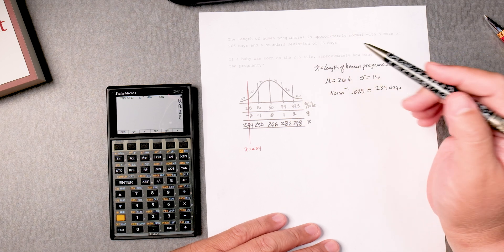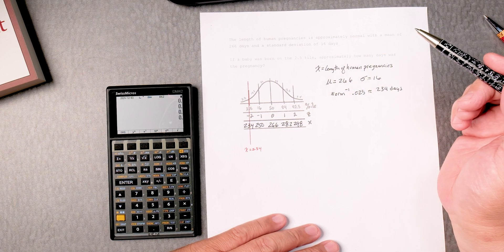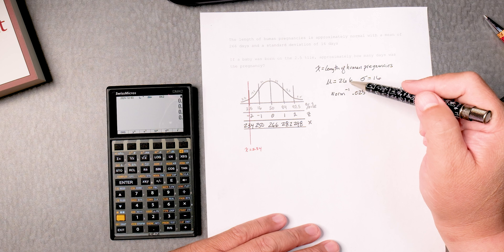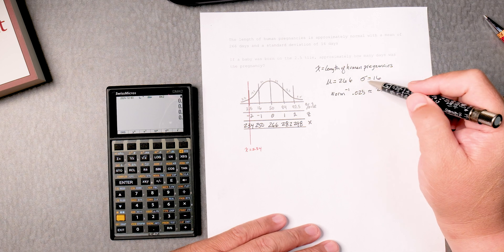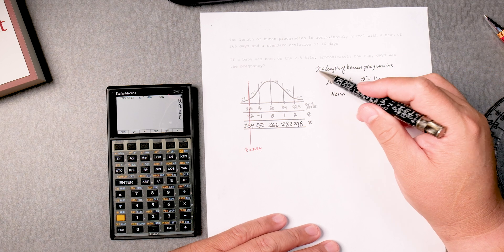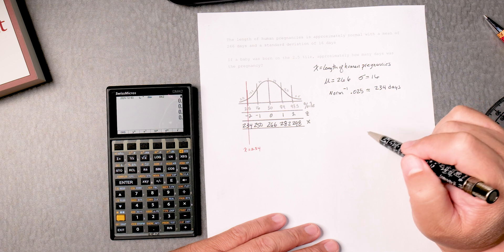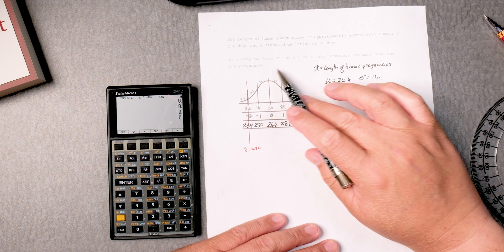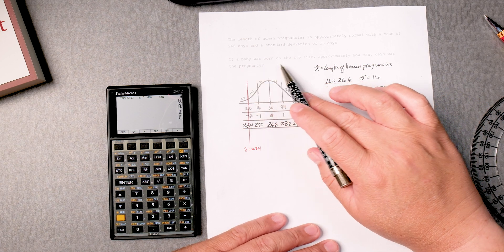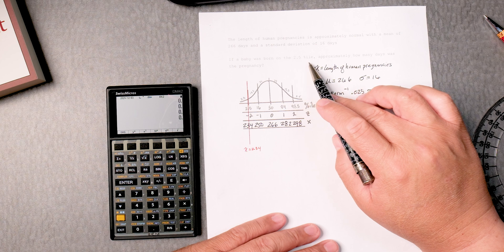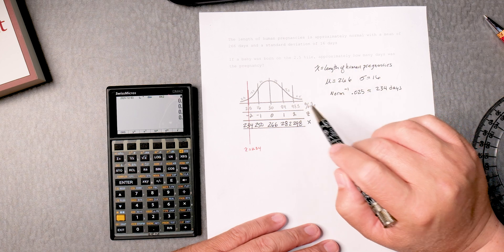To do the inverse normal is going to be pretty straightforward. Here we have a problem about human pregnancies with a mean of 266 and a standard deviation of 16. The random variable is the length of human pregnancy. They want to know, if a baby was born at the 2.5 percentile, approximately how many days was the pregnancy?